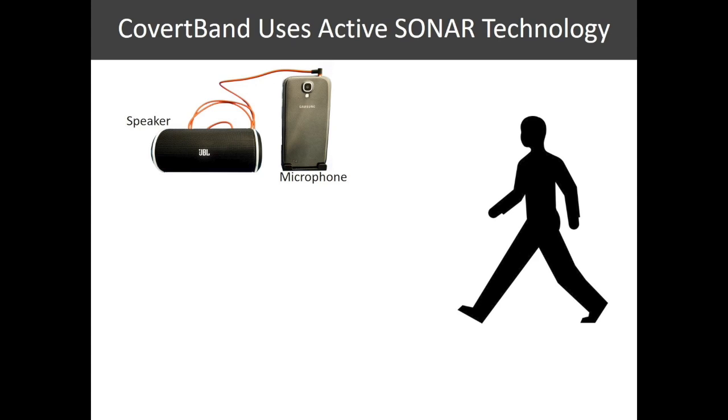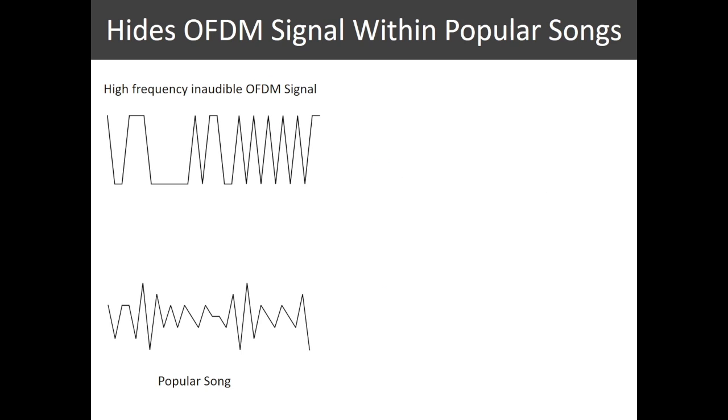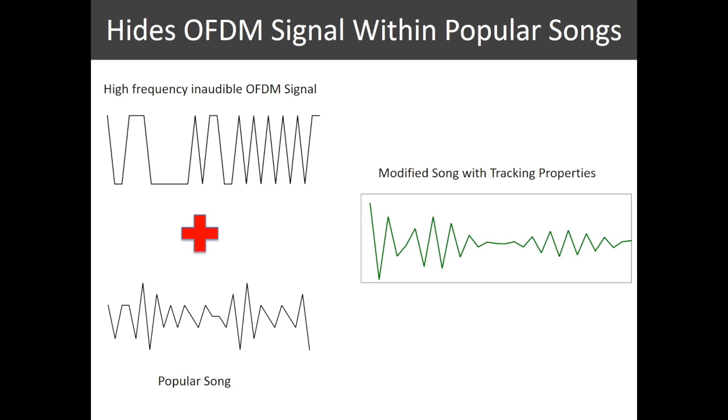CovertBand achieves this by using active sonar technology. It plays a high-frequency OFDM signal and monitors the changing reflections caused by human motion. CovertBand conceals this high-frequency OFDM signal within the beats of popular songs, making it indistinguishable.